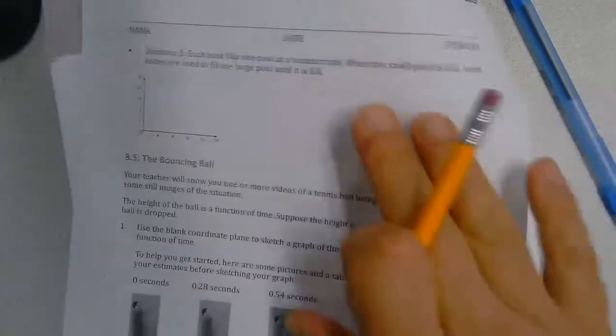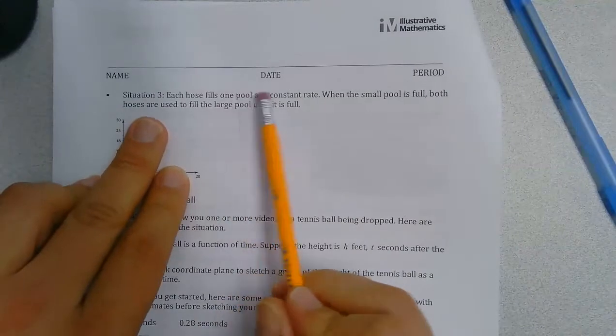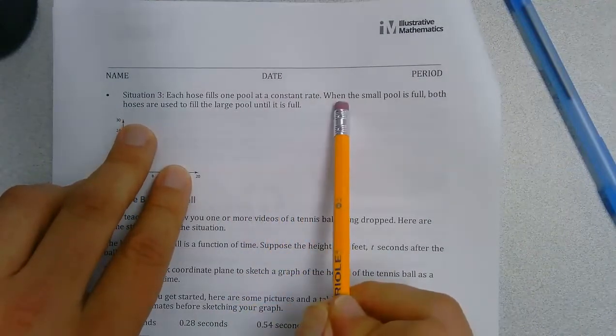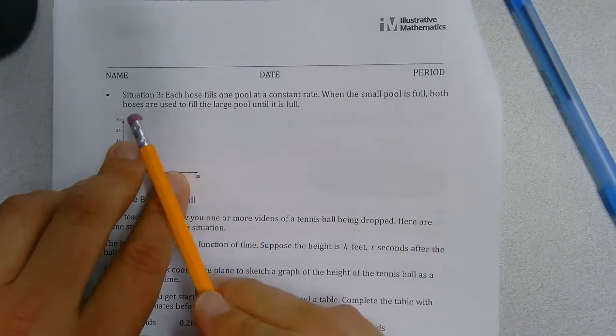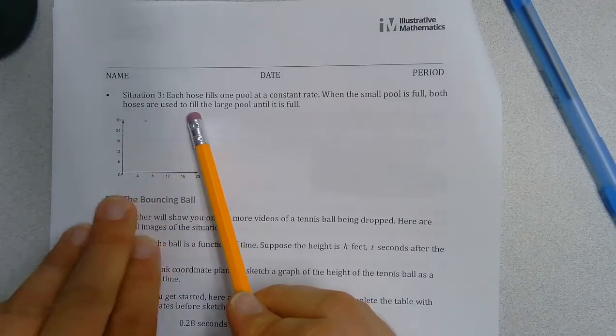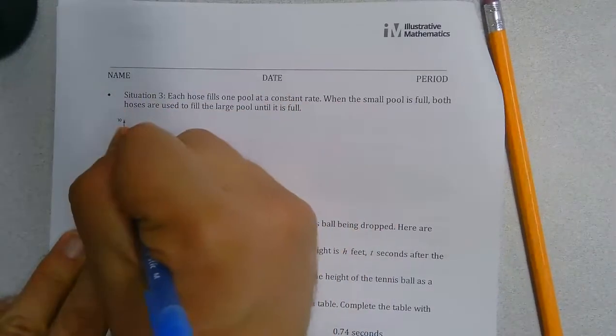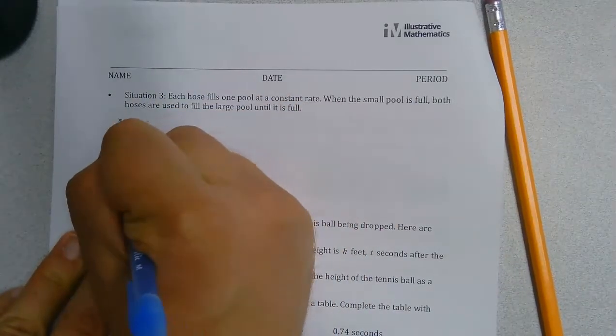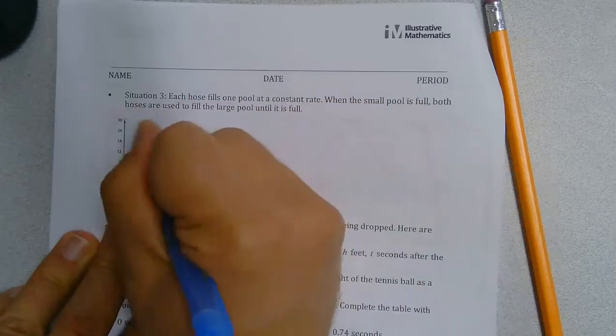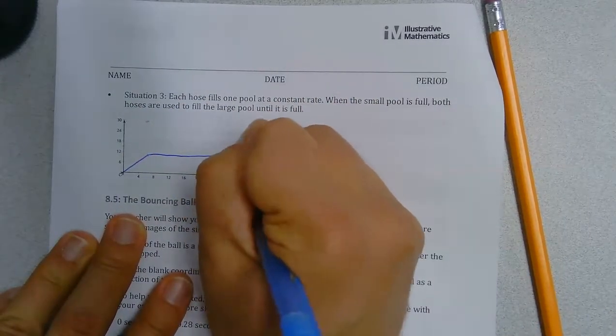Now we're going to look at situation three. Each hose fills one pool at a constant rate. When the small pool is full, both hoses are used to fill the large pool. Remember, our small pool gets filled at a constant rate, then just stops. This is S of T.